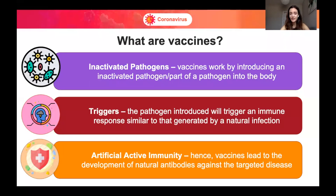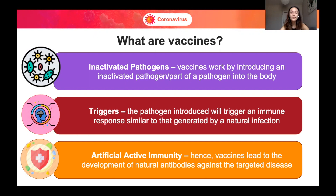So now, what exactly are vaccines? Vaccines are inactivated pathogens and they work by introducing an inactivated pathogen or a tiny part of a pathogen into the body. That pathogen will trigger an immune response very similar to that generated by a natural infection, however, without giving you the symptoms and signs of infection.